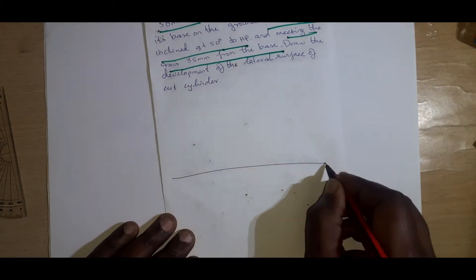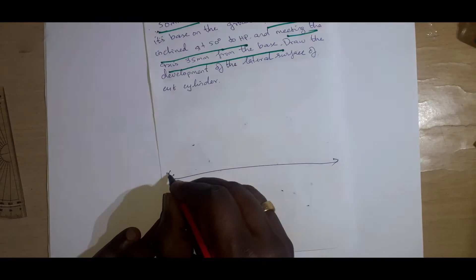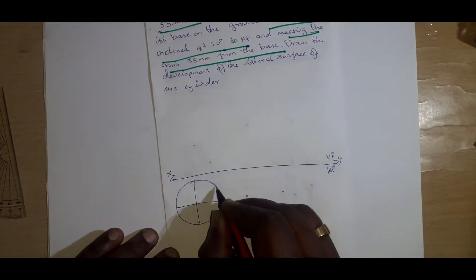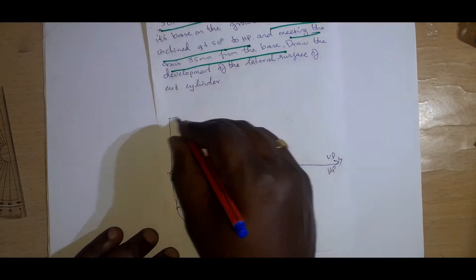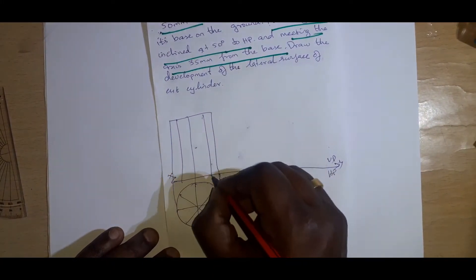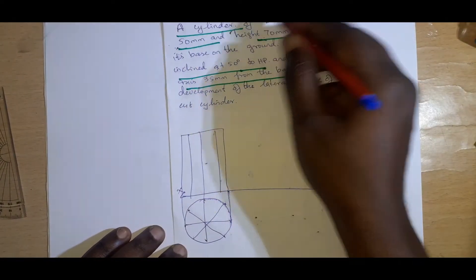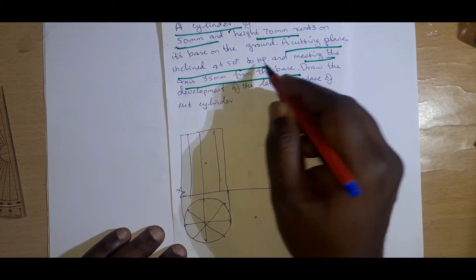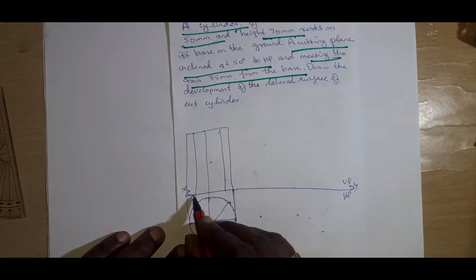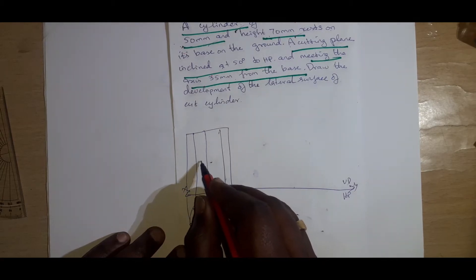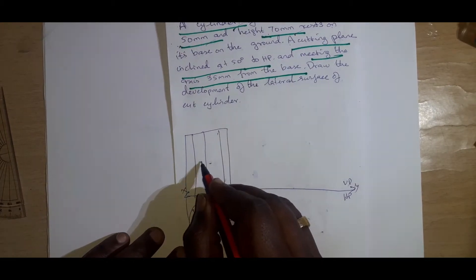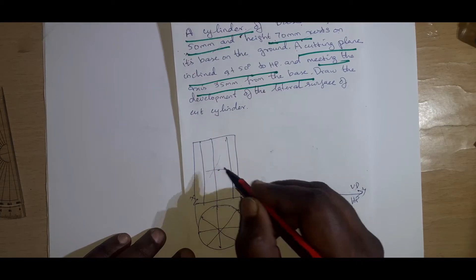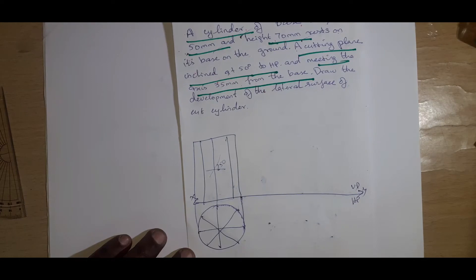We draw a lengthy XY line — this is the VP and HP reference line. The cylinder is in a simple vertical position. We draw the given diameter, divide it into eight equal sections, and draw the front view accordingly. The cutting plane is inclined at 50 degrees to HP and meets the axis. We measure 35 mm above the HP line, which falls at roughly the middle, and draw the 50-degree inclined cutting plane line from that point.